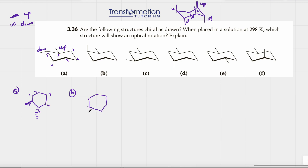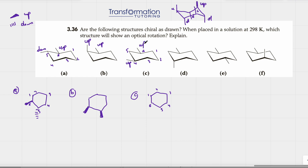For structure B, positions five and six: this one is up and this one is up as well — so both are up. Let me draw both wedges. For structure C, numbering one through six, position four is up and position six is up, so I'll draw a wedge on four and a wedge on six.